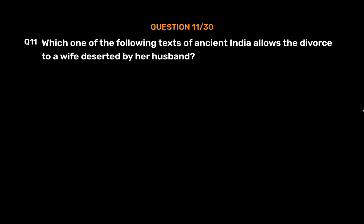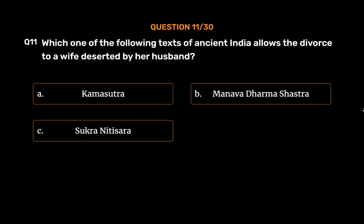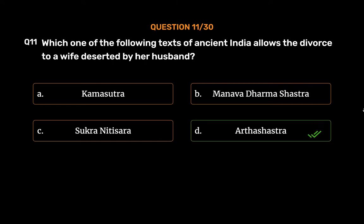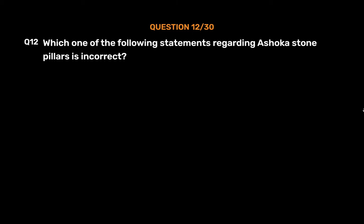Question number eleven: Which one of the following texts of ancient India allows divorce to a wife deserted by her husband? Option A: Kama Sutra, Option B: Manusmriti (Manavadharma Shastra), Option C: Shukranitisara, Option D: Arthashastra. The correct answer is Option D, Arthashastra. The Arthashastra was written by Kautilya; in this book, 'moksha' has been used for divorce.